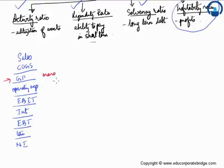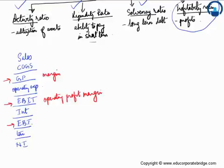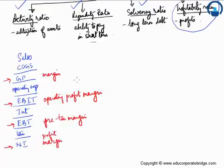Calculating the profitability measures can be done at various intervals. You can calculate something called gross profit margins or GP margins. You can also look at EBIT — earnings before interest and taxes — or operating profit margins. Then there is the earnings before taxes level, which is basically the pre-tax margin, and at the net income level, this is called the profit margin.